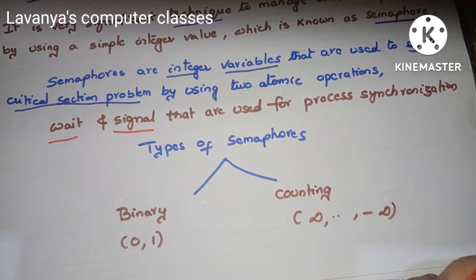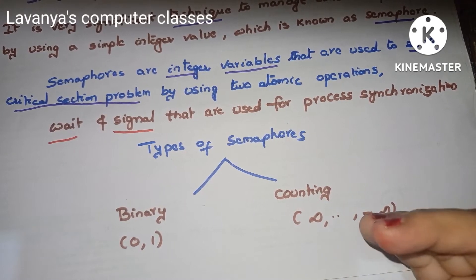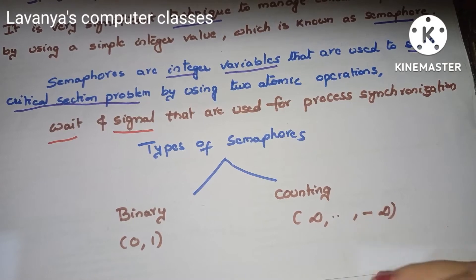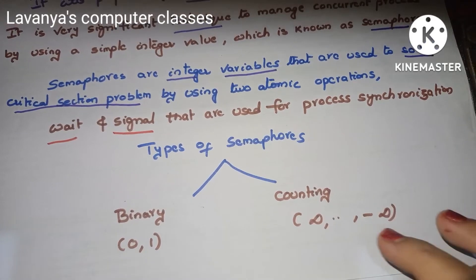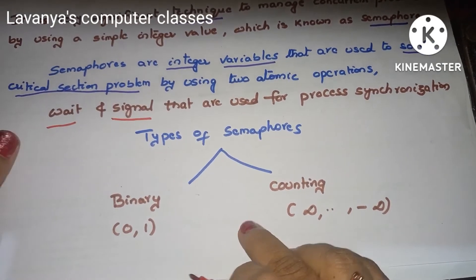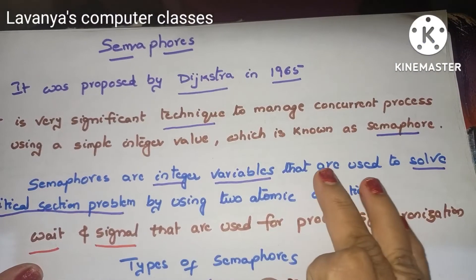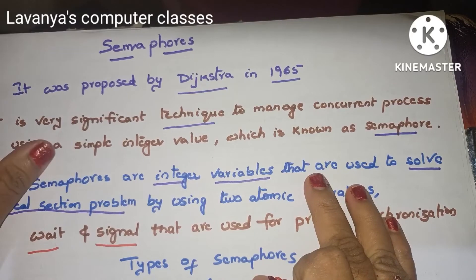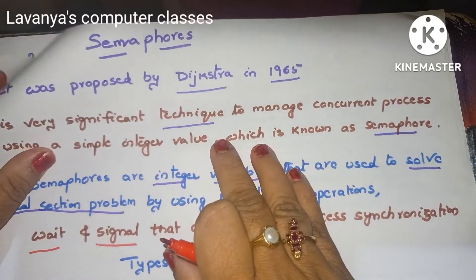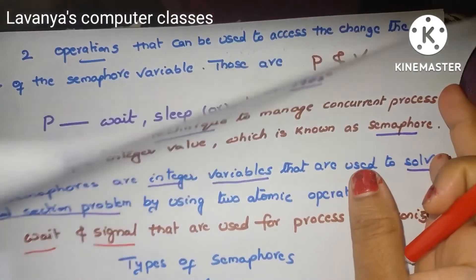In counting semaphores, when a process comes in it is incremented; otherwise it is decremented. These are the types of semaphores — binary and counting. The two operations used in semaphores are used to access and change the value of the semaphore variable.